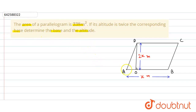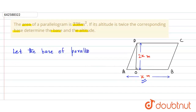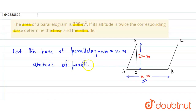First, we consider: let the base of the parallelogram be x meters. So its altitude will be equal to twice of the base, so here it will be 2x meters.